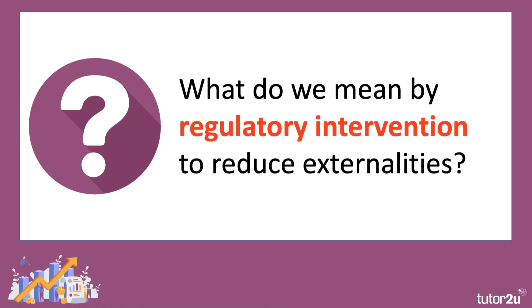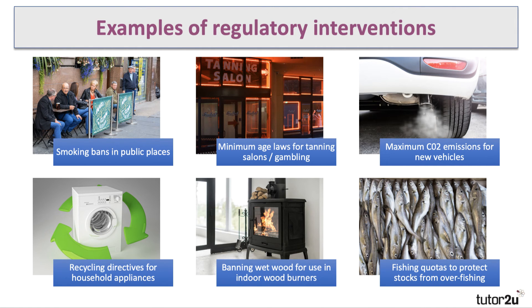A third alternative — after carbon taxation and carbon trading — is to regulate: to introduce laws and regulations. A regulatory intervention uses the power of law to try to control externalities. Examples include smoking bans in public places, minimum age laws for gambling and tanning salons, EU maximum CO2 emissions per kilometre for new vehicles, regulations requiring recycling of household appliances, the UK government banning wet wood for indoor wood burners, and regulations on the amount of fish that can be caught in the oceans.